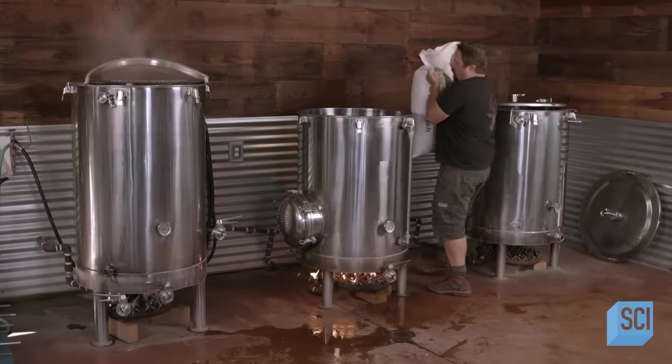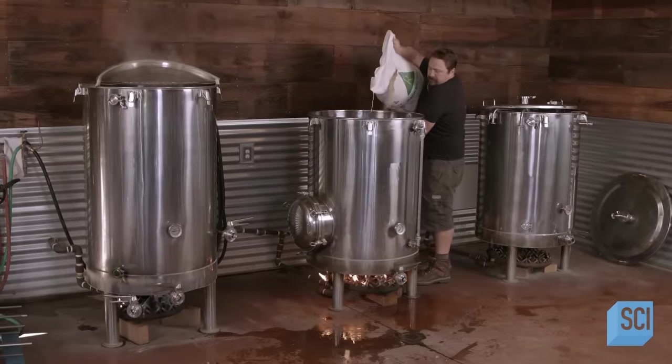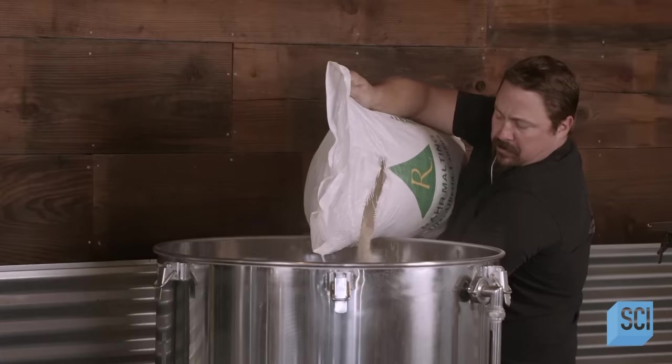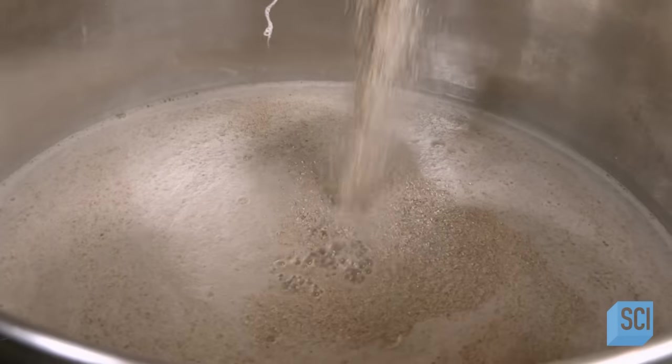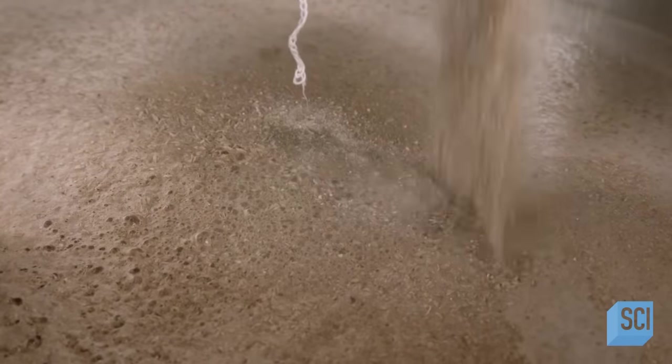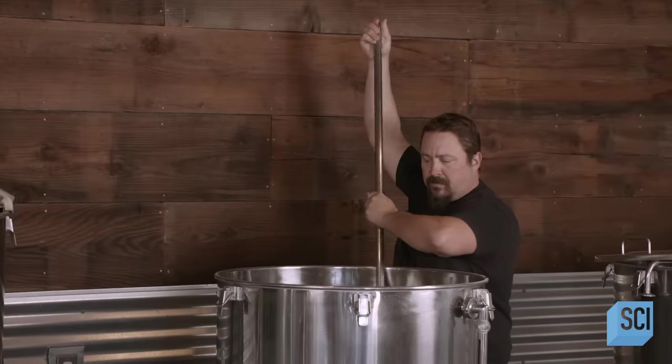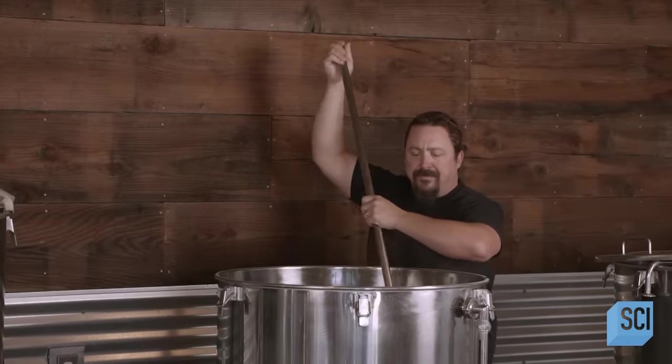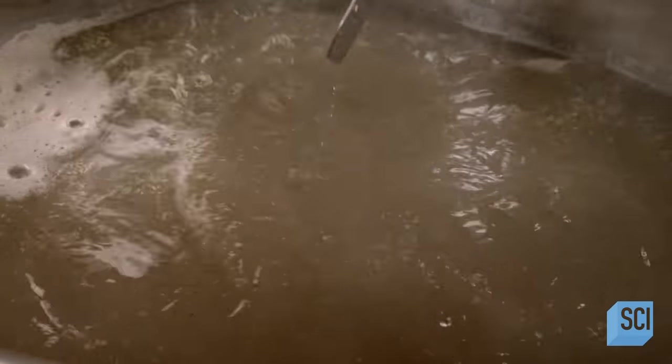Malts are cereal grains such as barley or corn, which have been soaked to kick-start germination, then, once sprouted, dried with hot air to halt germination. Stirring the malt into the hot water activates enzymes that convert the starches in the grain into fermentable sugars.